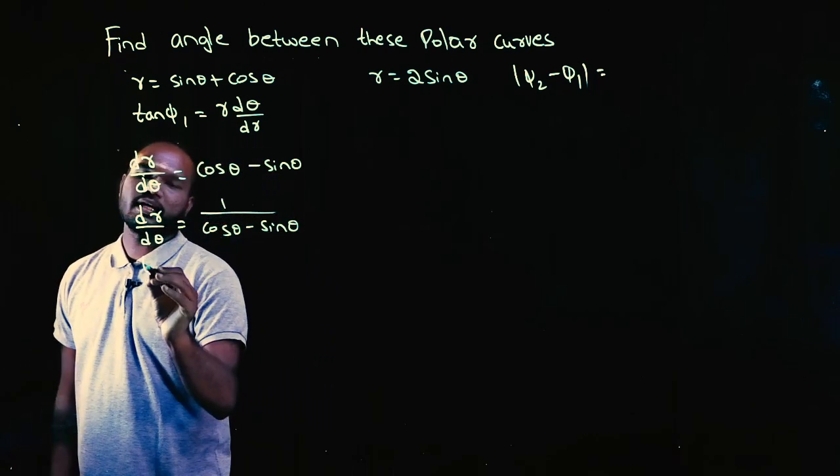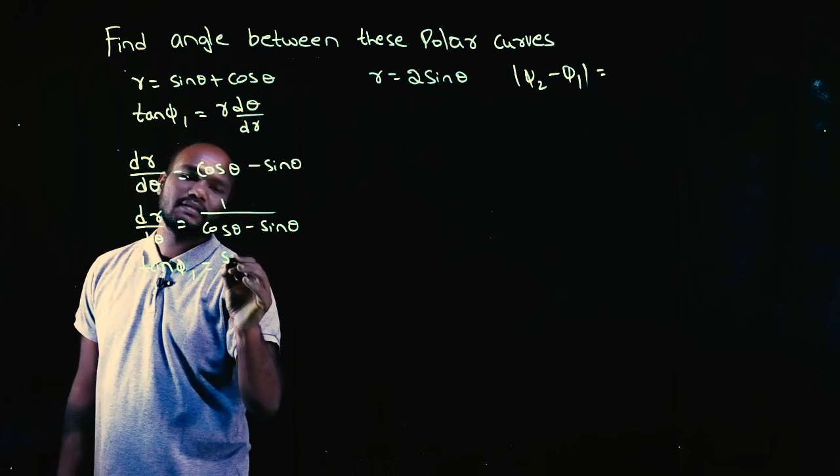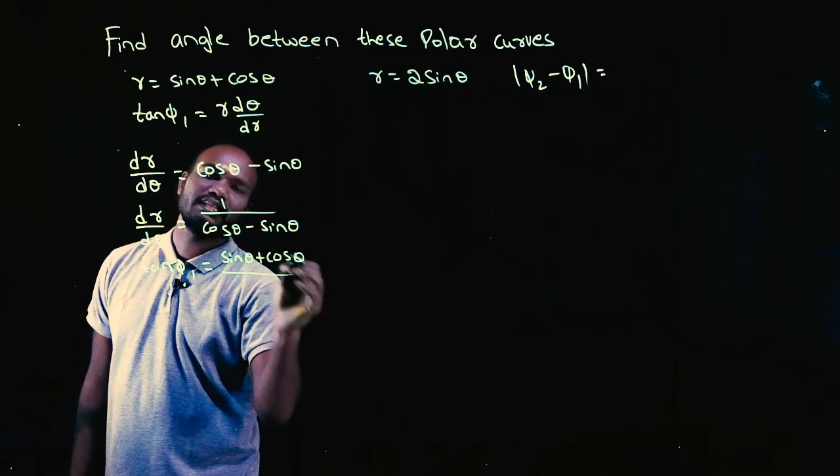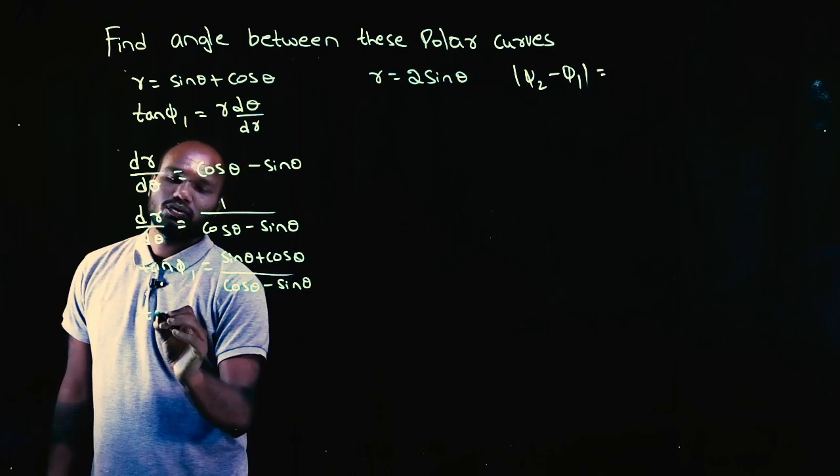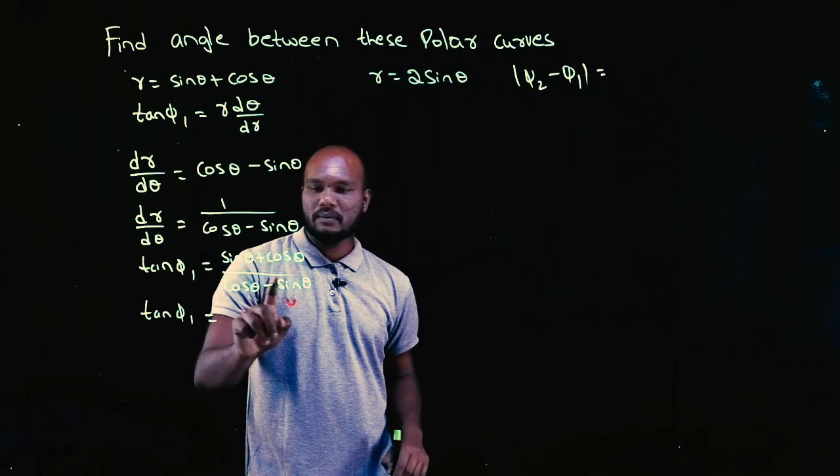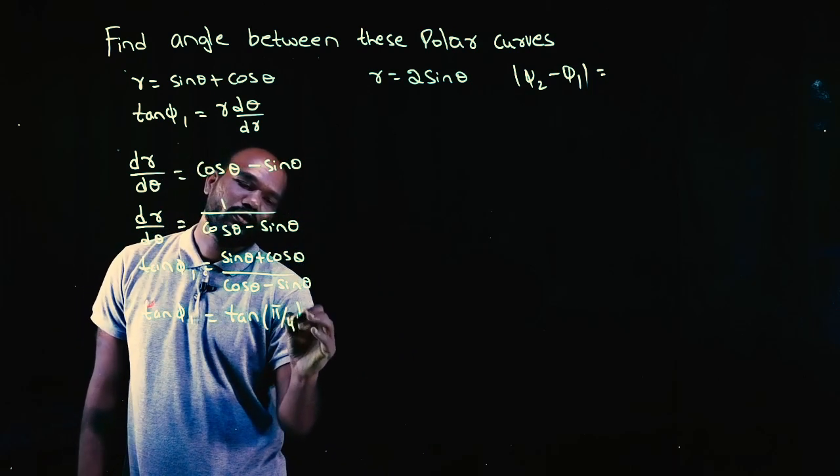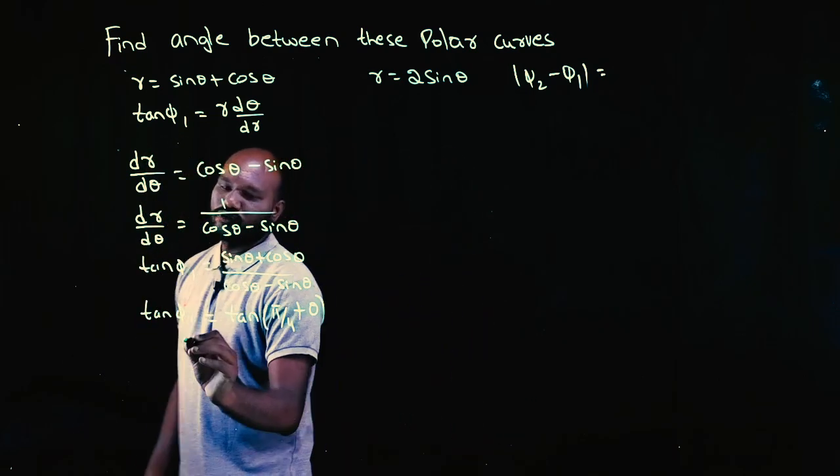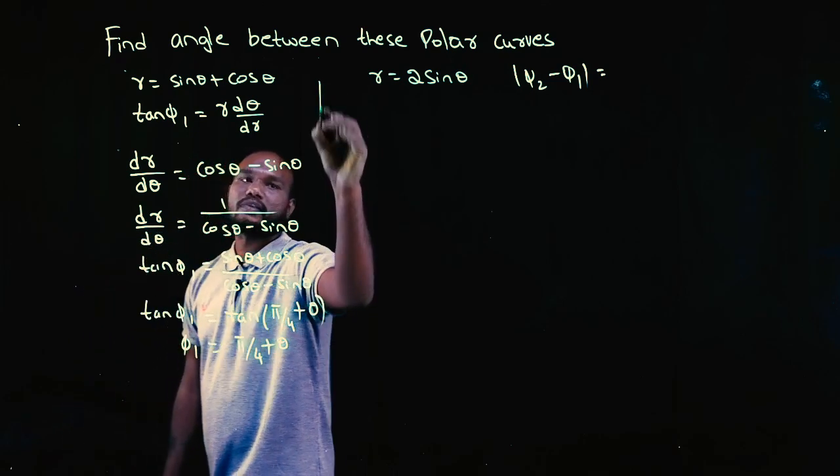Right, next what is the formula? tan phi 1 is equal to r. What is r? sine theta plus cos theta into d theta by dr. So this will become in the denominator cos theta minus sine theta. So tan phi 1 is equal to cos theta plus sine theta over cos theta minus sine theta, which is tan of pi by 4 plus theta. So phi 1 is equal to pi by 4 plus theta.